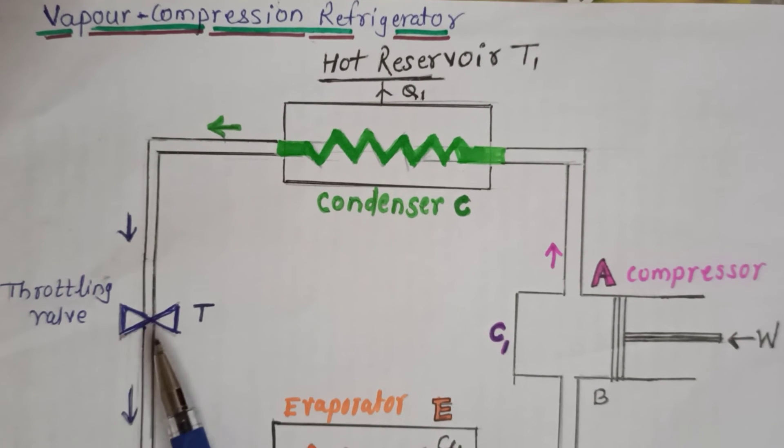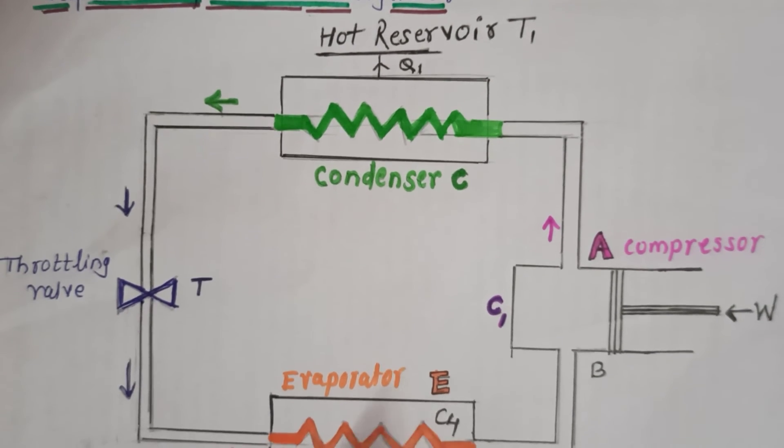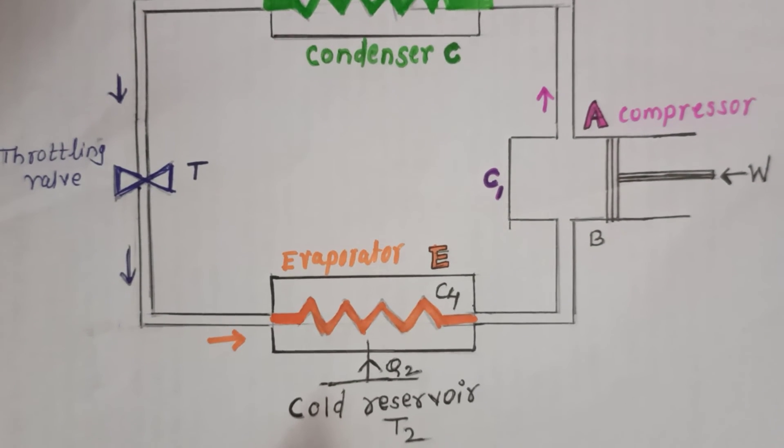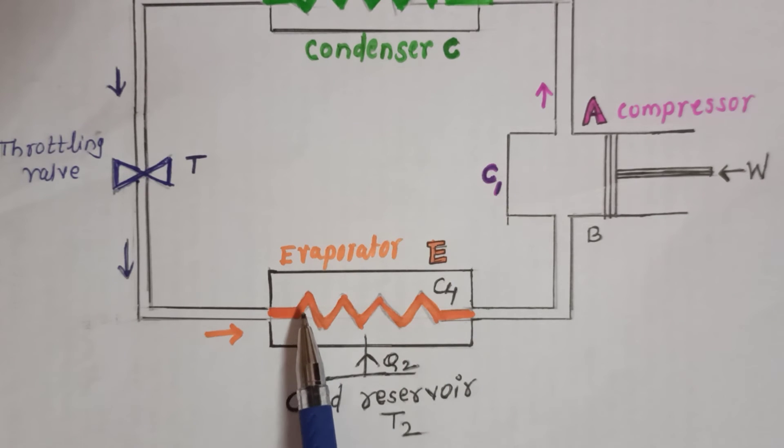This low temperature, low pressure gas is entered further into the evaporator chamber E. Inside this evaporator there is a coil C4. This coil contains a brine solution. In this evaporator, liquid is completely vaporized and amount of heat Q2 is extracted and it is cooled.